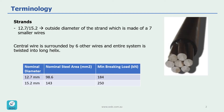The other term you need to be familiar with is strand. There are many different types of strands but the most common ones in Australia are 12.7 and 15.2. These numbers are also the outside diameter of the strand, which is made of seven smaller wires as shown here. There is a central wire and then six other wires around it, and the entire system is twisted into a long helix.